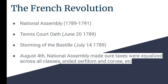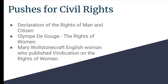Next, the National Assembly would make several great changes to the governmental system of France. It declared equal taxation on all classes, and also ended serfdom, which is basically just a glorified slavery system. There were also pushes for civil rights. The Declaration of Rights of Man and Citizen was issued on August 26, 1789, and became the official constitutional blueprint for France. The title 'citizen' was applied to all French people, regardless of class, which served as a gesture toward equality.